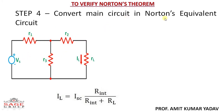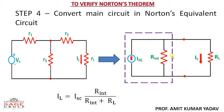After calculating the short-circuit current and internal resistance, we convert our circuit into the Norton equivalent circuit. The Norton equivalent circuit consists of a short-circuit current source connected in parallel with the internal resistance, and both are connected across the load terminal RL. From this equivalent circuit, the load current is: IL = ISC × R_int / (R_int + RL). This is the final formula for load current.